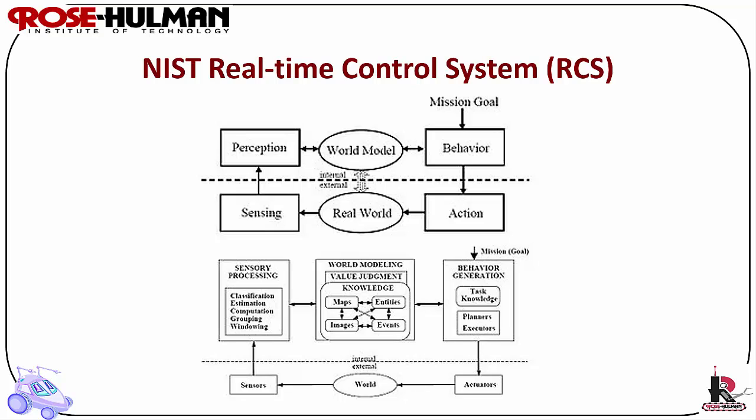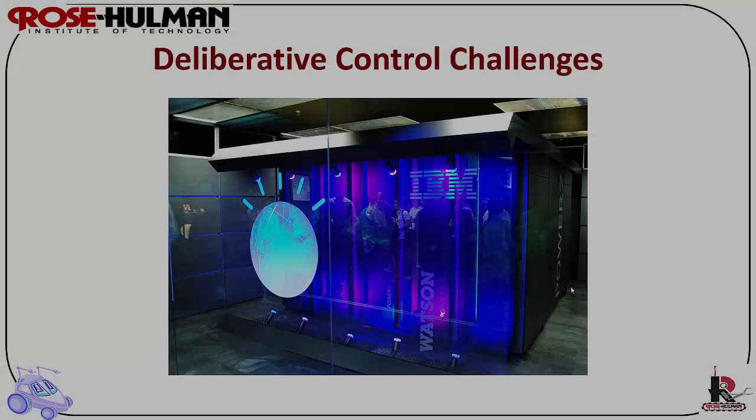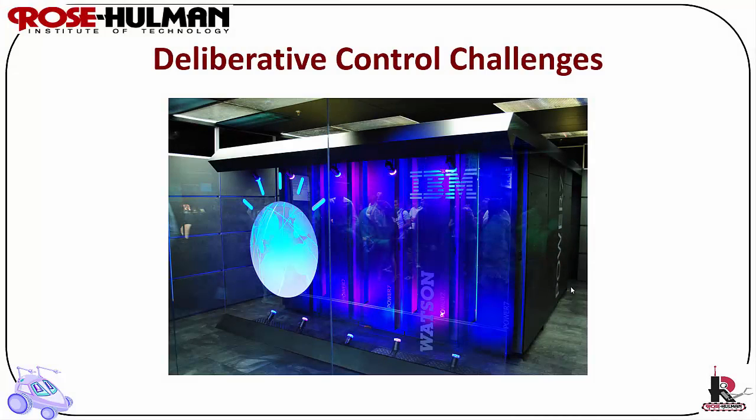As robotics advances, the robot moved up the autonomy hierarchy. Here's another diagram used to represent the NIST real-time control system. Some of the disadvantages in the RCS were that planning and updating a global world model was slow.